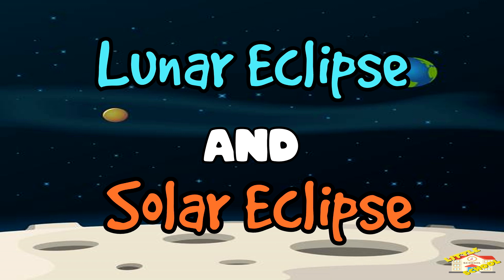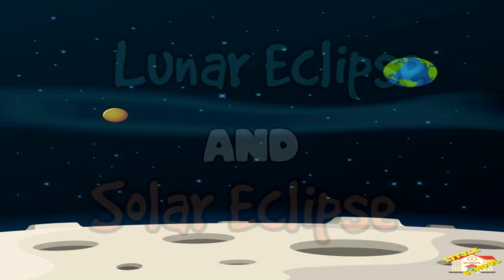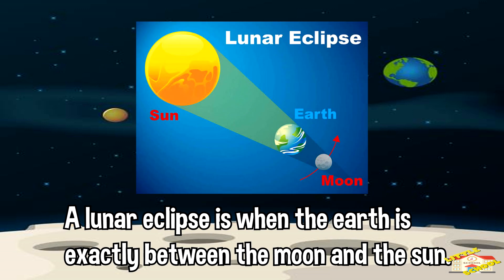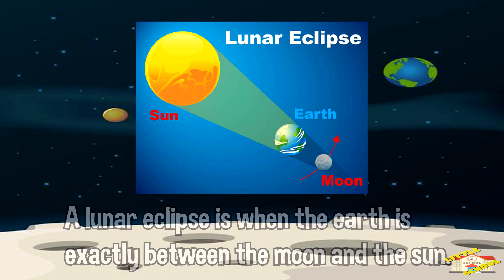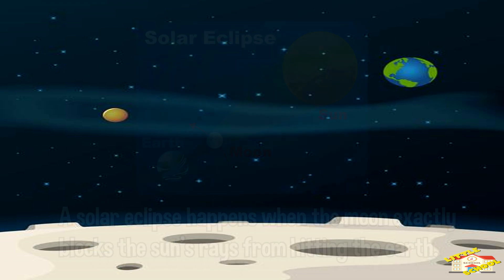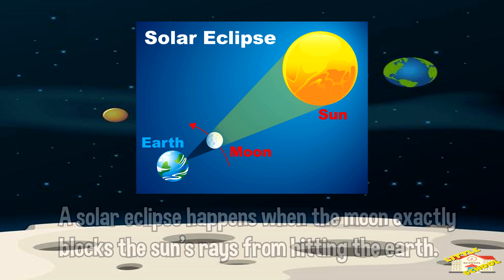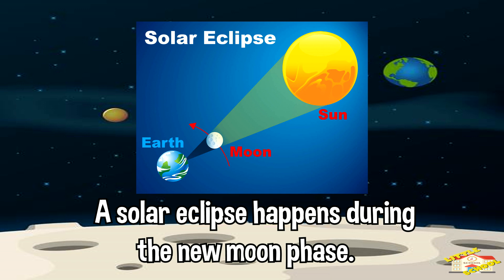Now let's get into the lunar eclipse and the solar eclipse. The lunar eclipse is when the Earth is exactly between the moon and the sun. When this happens, none of the sun's rays hit the moon. As for the solar eclipse, this happens when the moon exactly blocks the sun's rays from hitting Earth. A solar eclipse happens during the new moon phase.